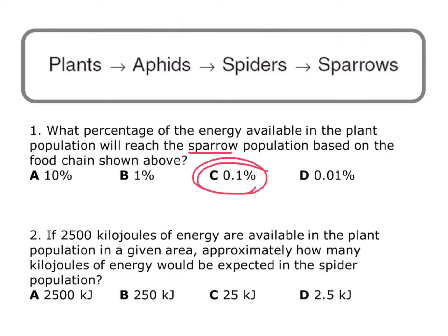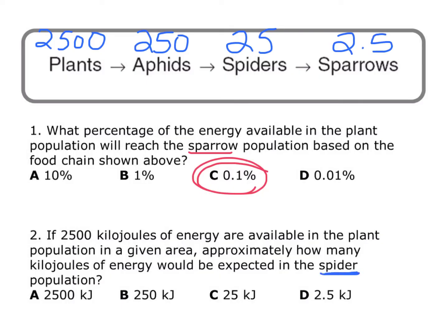The second question says: if 2,500 kilojoules of energy are available in the plant population in a given area, approximately how many kilojoules of energy would be expected in the spider population? I'll start by putting 2,500 over the plants. That gives me 250 over the aphids, 25 over the spiders, and 2.5 over the sparrows. They asked about the spider population, so the answer is 25.